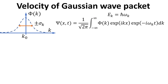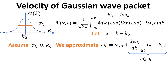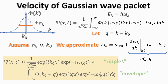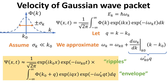Now, let's return to our earlier question about the velocity of the Gaussian wave packet. Here, let's consider a general wave packet where the packet in reciprocal space, as given by phi(k), is localized around the wave vector k0. We also introduce omega(k), which is related to energy via the Planck relation. Let's define q to be the wave vector relative to k0. If the standard deviation sigma_k is sufficiently smaller than k0, we can Taylor expand omega(k) around k0, allowing us to write omega(k) as omega(k0) plus omega-prime(k0) multiplied by q. With this, we arrive at an approximate expression for the wave function psi, where the approximation allows us to pull out a plane wave from the integral, defined by the wave vector k0. We call this the ripple term.